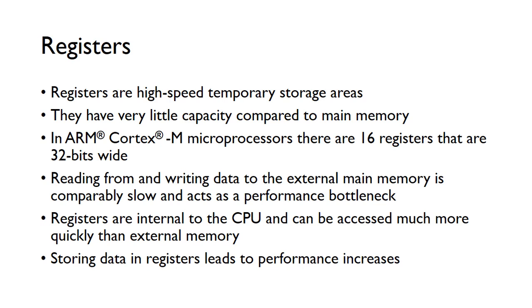Registers are high-speed temporary storage areas, but they have very little capacity compared to main memory. The main memory could be gigabytes in size, but registers typically just store a few bytes. In Cortex-M microprocessors, found inside the most common microcontrollers, there are 16 registers that are 32 bits wide — so each register is four bytes wide and there are only 16 of them. Reading data from or writing data to external main memory is comparably slow and can act as a performance bottleneck. Because registers are internal to the CPU, they can be accessed much more quickly than external memory, so storing data in registers leads to performance increases.